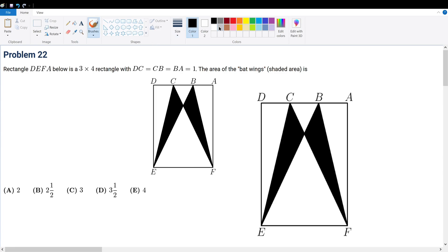Problem 22. Rectangle DEFA below is a 3x4 rectangle with DC equal to CB equal to BA equal to 1. So this is 1, this is 1, this is 1. The area of the batwing shaded area is what area?